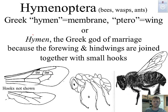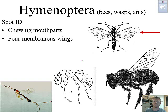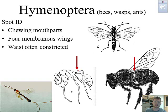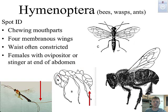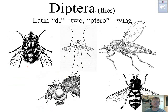Hymenoptera: bees, wasps, and ants. 'Hymen' means membrane, 'pteron' means wing. You can see the example on the membranous wing — four membranous wings and chewing mouth parts. The waist is often constricted. When I think of a wasp, many different wasp species, and also ants have some constricted waist — we look closely at bees and notice the same. Females might have an ovipositor for depositing eggs, or a stinger. Many bees and wasps are going to have stingers for defense, and some ants even have stingers as well.